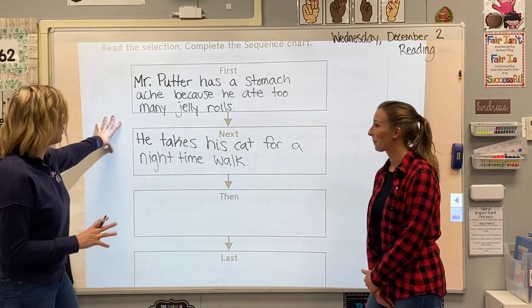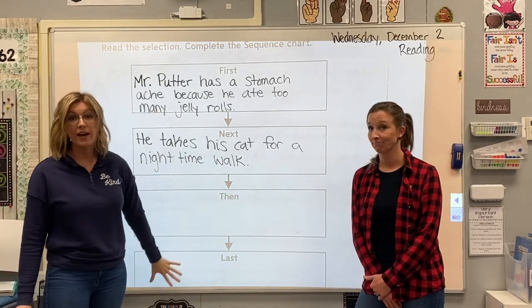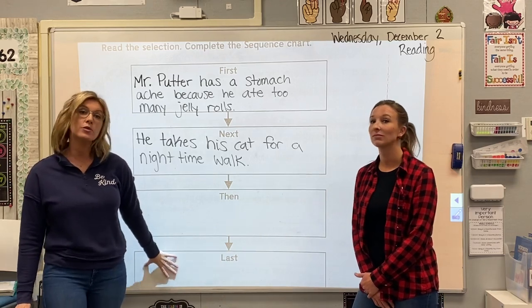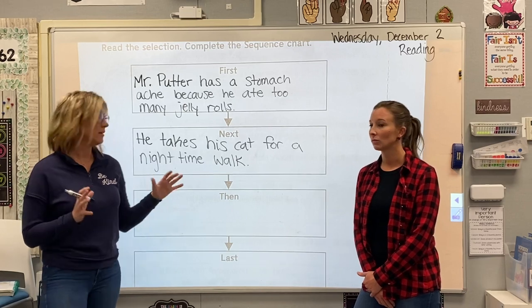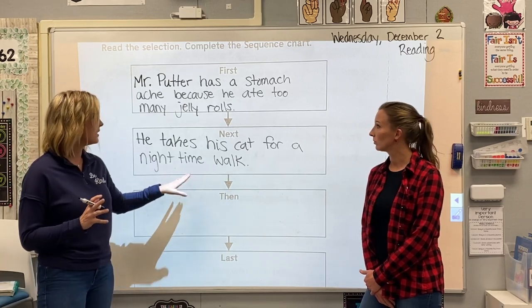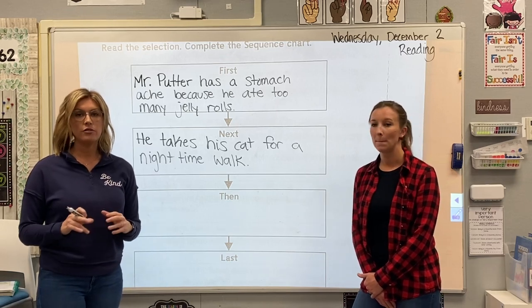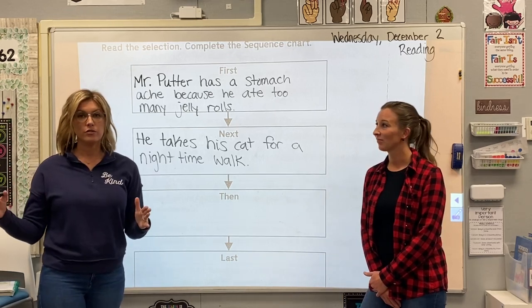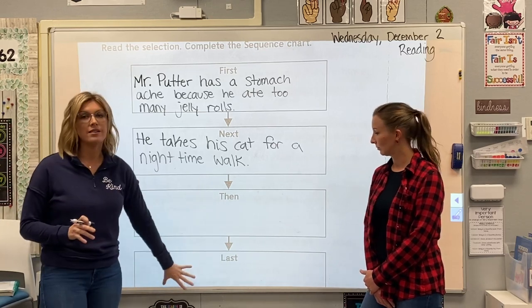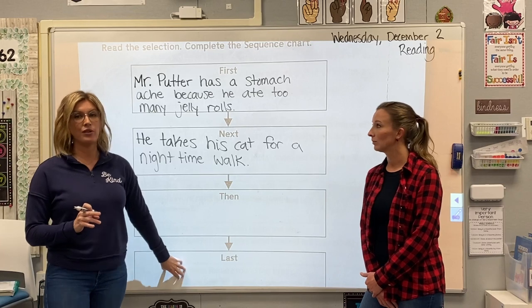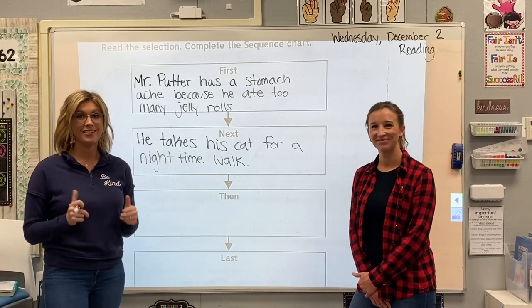We have done the first two for you guys. We're not going to tell you the last two because we want you to read the story on your own — you have this book. If you need to go back and start at the spot where he takes his cat for a walk, go ahead and do that. Look through the rest of the story so you can tell us what happens after that and what the final thing is that happens in the story. You guys can write a sentence for each of these blank boxes. Good luck.